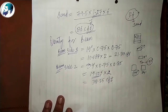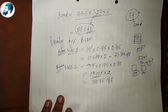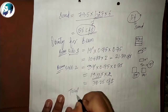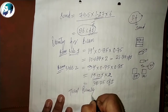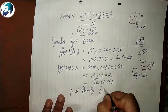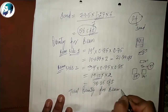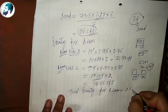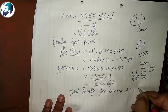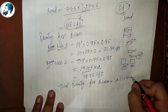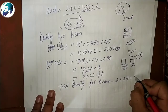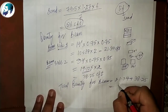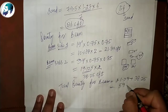Total quantity for beam will be 21.375 + 38.25 = 59.62 CFT. We have done the estimation for the beam quantity.